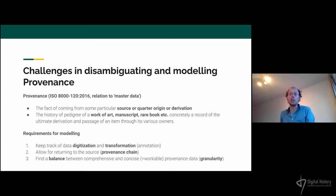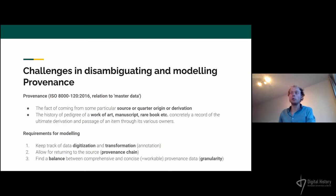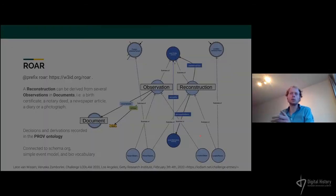By definition, provenance refers to something coming from a particular source, or how something is derived. For art historians, provenance is the ultimate derivation or passage of a work of art — the Getty Provenance Index is a well-known example. All steps need to be transparent so you can go back in the process of creating your material. We have requirements for modeling to keep track of the digitization and transformation process, and at any point we want to be able to go back in the provenance chain — important for a research infrastructure dealing with researchers. We need to find a balance between being very comprehensive and delivering a workable format.